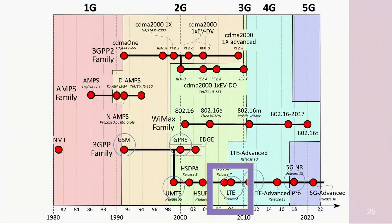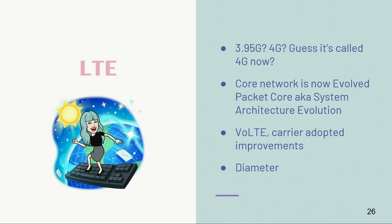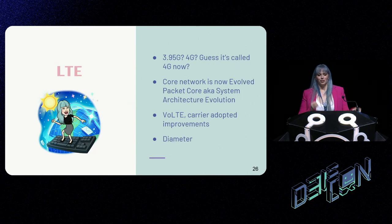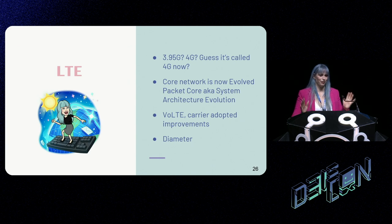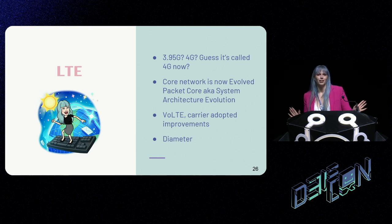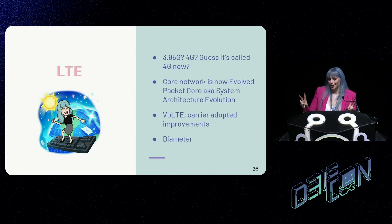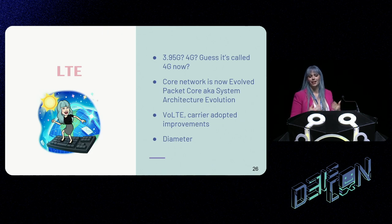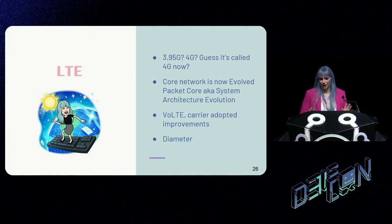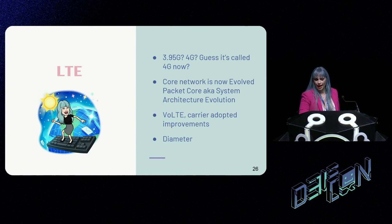Let's move on to LTE — long-term evolution, in the late aughts. I'll refer to it as 3.95G because initially the standards committees said this is not officially 4G, so it became '4G LTE.' This is where we get the evolved packet core or system architecture evolution — the E in LTE is going to be everywhere, they're very into evolution. And we get fully IP-based: no more separation between our circuit-switched portion and our IP portion.